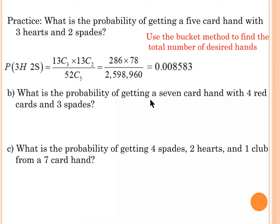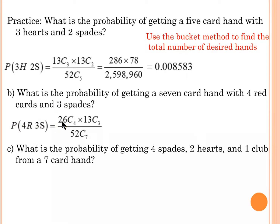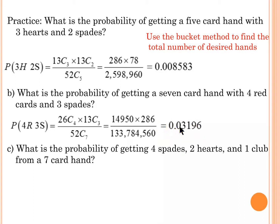What is the probability of a seven-card hand with four red cards and three spades? Since this is a seven-card hand, the denominator becomes 52 choose 7 instead of 52 choose 5. There are 26 red cards (half of 52), so 26 choose 4. There are 13 spades, so 13 choose 3. Multiply those and divide by 52 choose 7. The result is 0.03196, or about 3.196%.